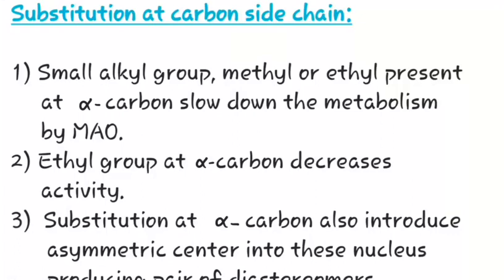Now, let us study the substitutions at the carbon side chain. Small alkyl groups, methyl or ethyl present at the alpha carbon slow down the metabolism by MAO i.e. monoamino oxidase enzyme. Ethyl group at the alpha carbon decreases the activity. But it decreases alpha activity more than the beta activity.